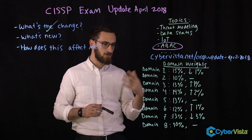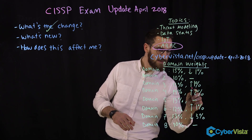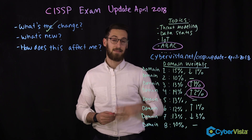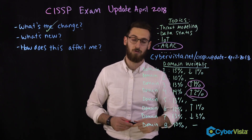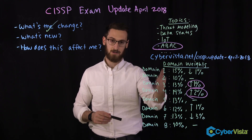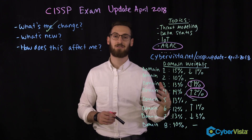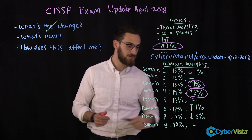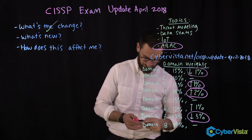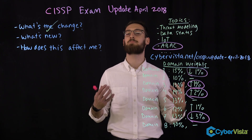A few things you should notice: domains three and four went up slightly. That's significant because domains three and four — Security Architecture and Engineering, and Network Communication Security — are two of the most technical domains. You'll also notice that domain seven went down three percent and domain one went down slightly. These are two of the least technical domains.